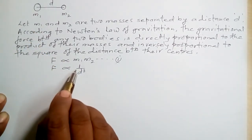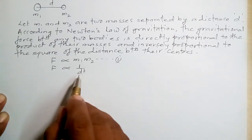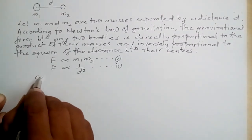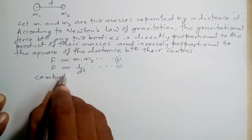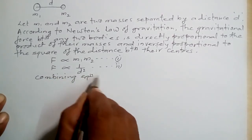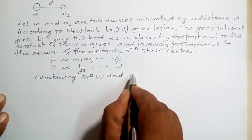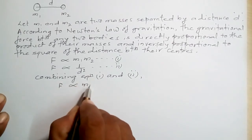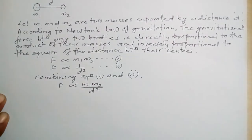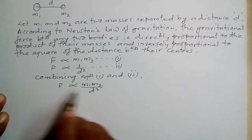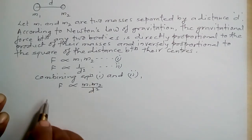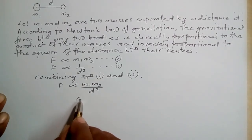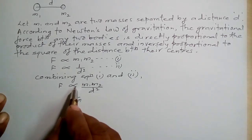The same proportional sign is called inversely proportional when the quantity on the right-hand side is taken in the denominator. This is the second equation. Now combining equation 1 and equation 2, we get: gravitational force is directly proportional to M1M2 and inversely proportional to D square.